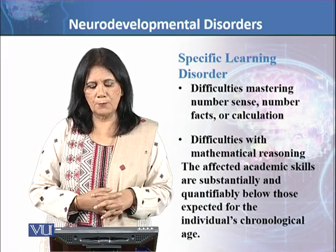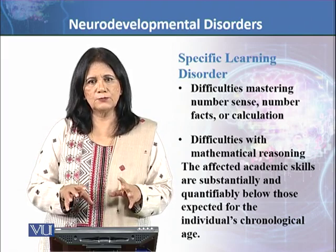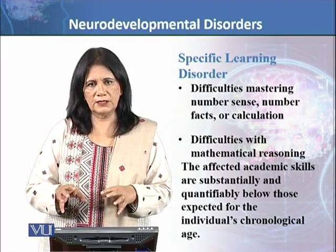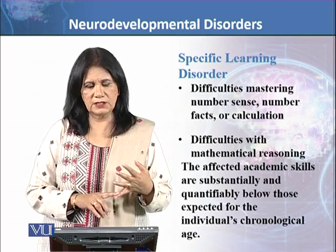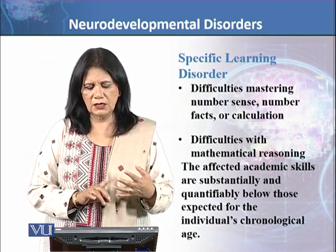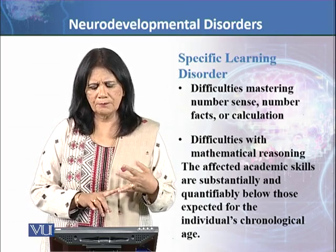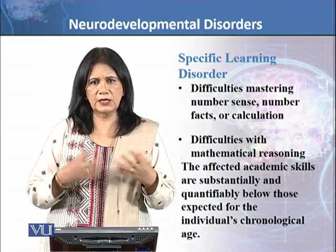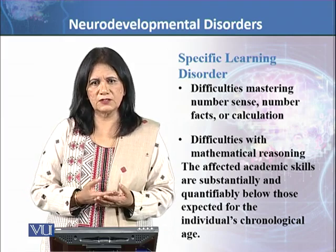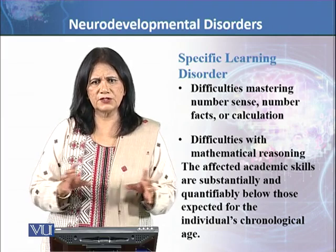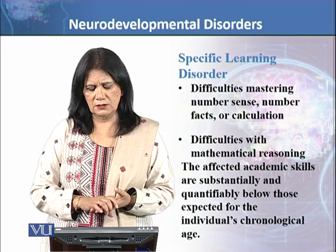The fifth area of difficulty is mastering number sense, number facts, or calculation. This relates to mathematical ability. If the child doesn't understand number sense, basic facts, or simple calculations — basic sums and abstractions — that is an issue. We don't expect complex calculations from small children, but basic calculations must be assessed.